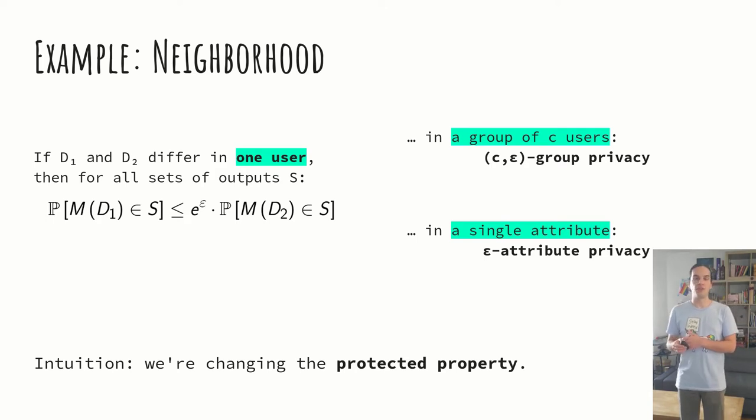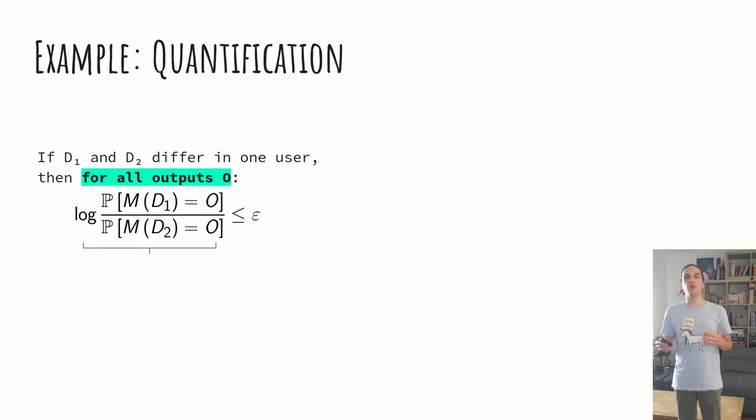Let's look at another thing you can do to change the definition. Here's a rewritten version of differential privacy. For any possible output O, the privacy loss associated to output O, the log of the ratio between the probabilities of obtaining these outputs for D1 or D2, is always lower than epsilon. Intuitively, that privacy loss quantifies how much probabilistic information the attacker gains. Here, we see that differential privacy is a worst-case property.